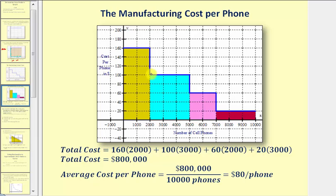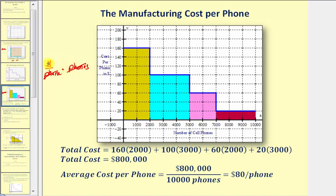Notice how to find the area, we have to break this up into four different rectangles. So to find the total area, we'd find the area of each rectangle and then find the sum of the four areas. Before we find the area, let's determine the units. The vertical length would be cost in dollars per phone, and the width would be the number of cell phones, so the units would be phones. The units of phones simplify out, leaving us with dollars, and therefore the area is going to be the total cost of manufacturing these 10,000 phones.